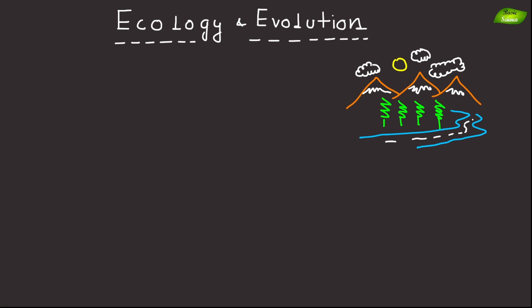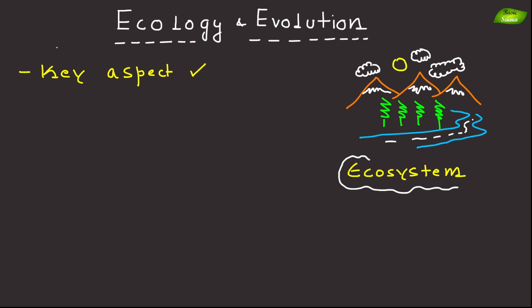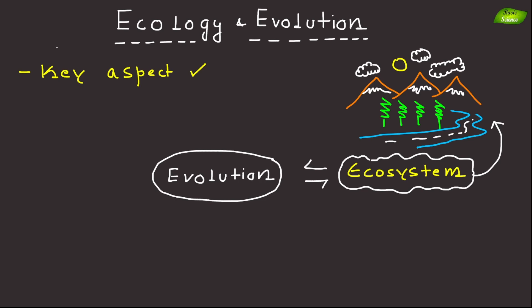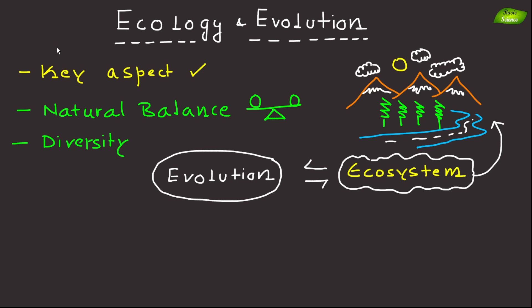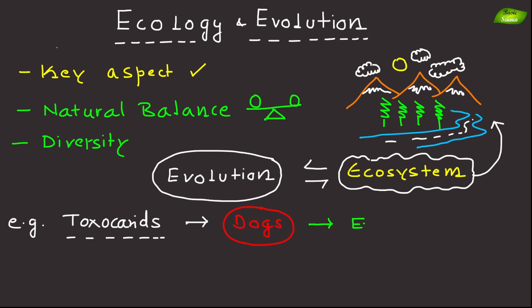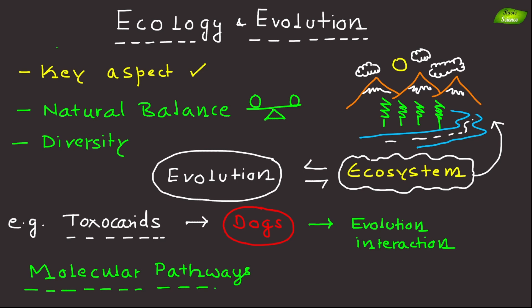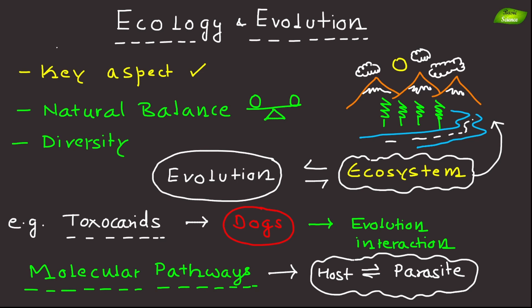Another important aspect of parasitology is ecology and evolution. Parasites play key roles in our ecosystem and have profound impacts on the evolution of their hosts. Studying these interactions provides useful insights into the natural balance and biodiversity of ecosystems. For example, parasitic roundworms and their host — the dog — are known to influence each other's evolution, helping us understand the molecular pathways involved in host-parasite interactions.